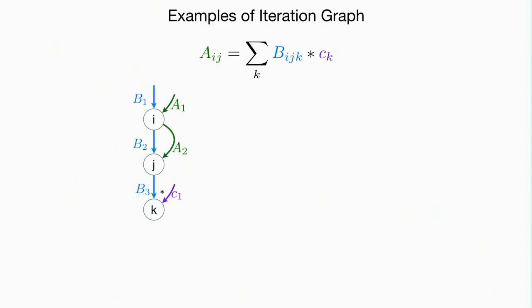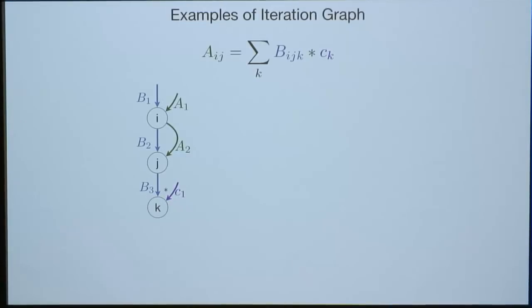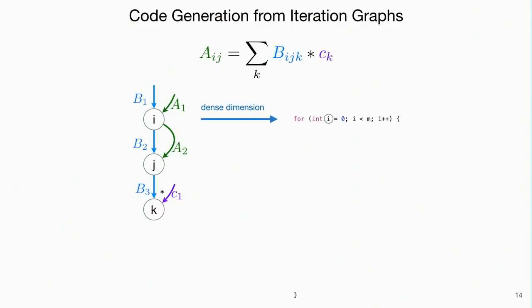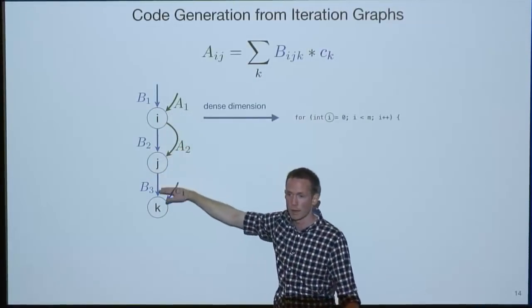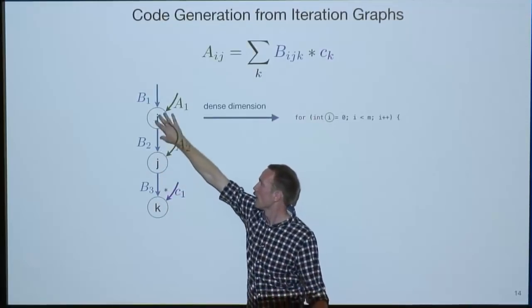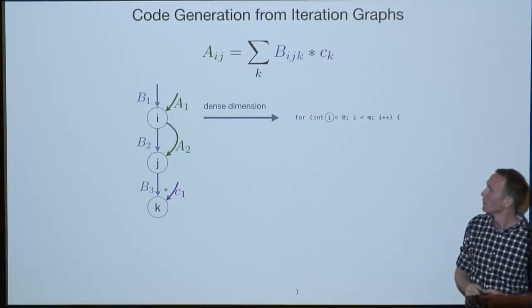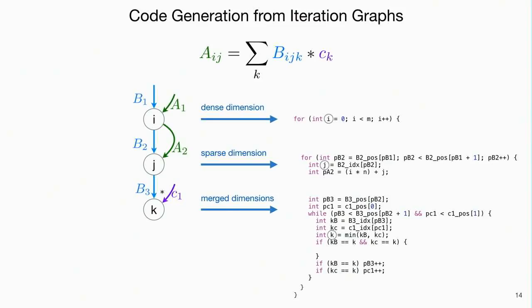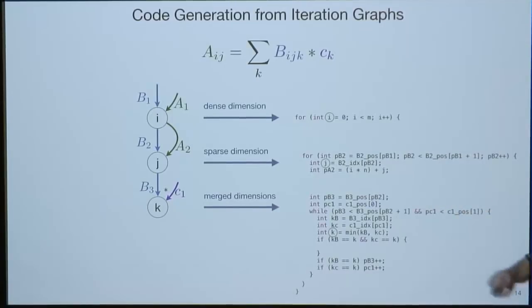For code generation: given the iteration graph produced from formats and expression, we use a recursive algorithm that generates code for each level separately. If the first dimension of B is dense, we emit a simple dense loop. If B is sparse, we emit a sparse loop. The complexity comes when you have a merge — merging a sparse B with a sparse C requires emitting merge code. At the center you emit a compute statement.